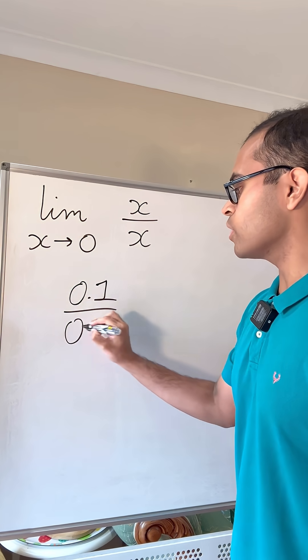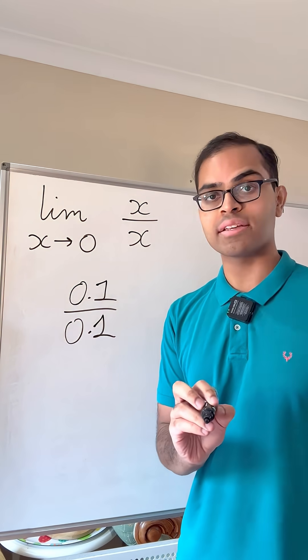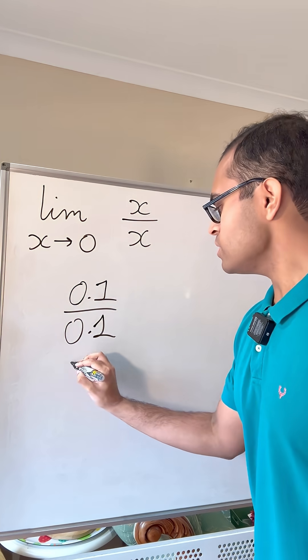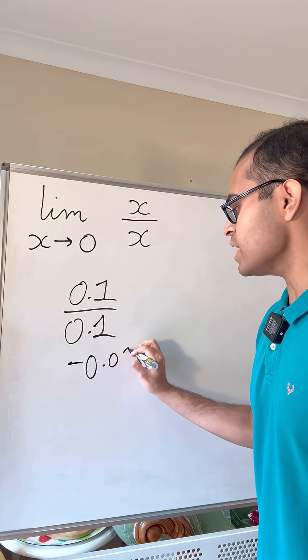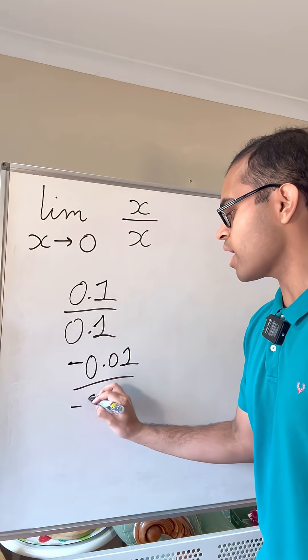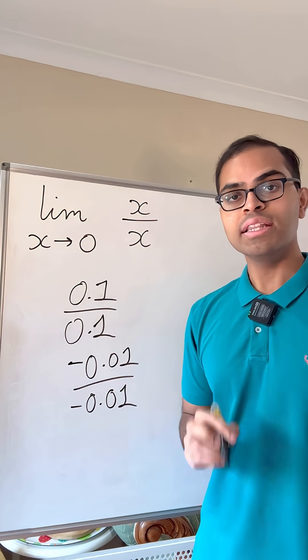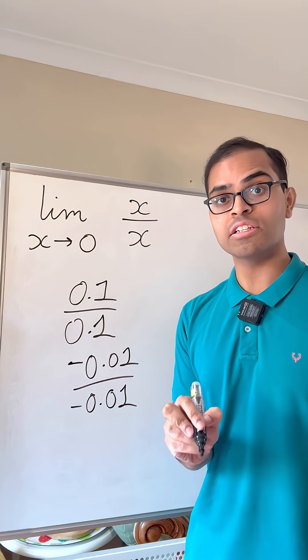0.1 over 0.1. This is x over x when x is 0.1. Then we take, it could be the other side, it could be negative numbers, minus 0.01 over minus 0.01. These are all x over x values when x is close to 0.